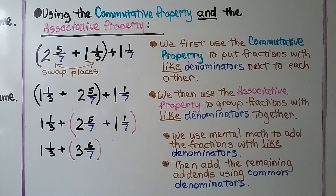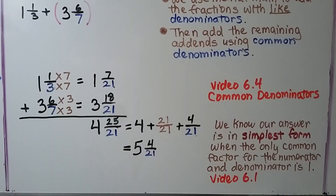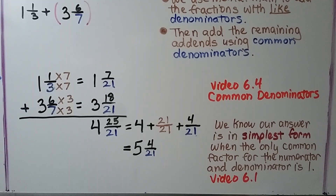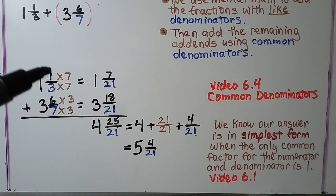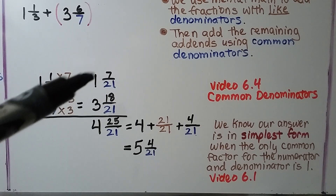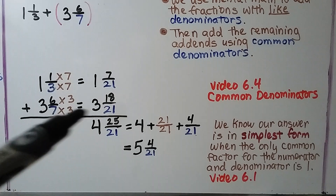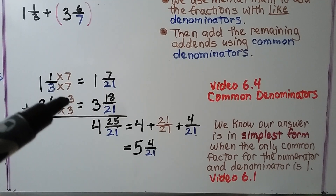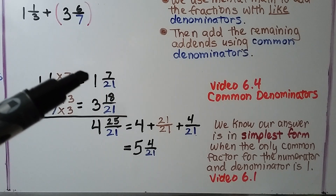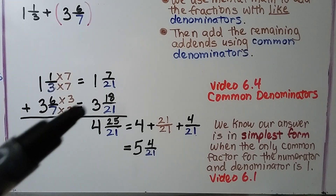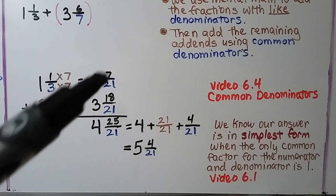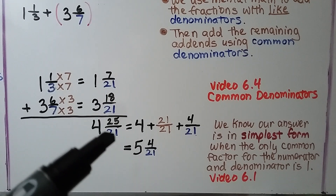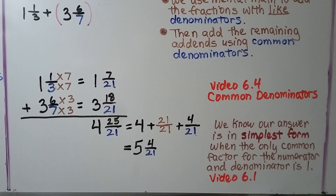Then we add the remaining addends using common denominators. We have 1 and 1 third plus 3 and 6 sevenths — a denominator of 3 and a denominator of 7. We multiply these denominators together to get a common denominator of 21. 3 times 7 is 21, so we multiply the numerator by 7 to get 1 and 7 twenty-firsts. And 7 times 3 is 21, so we multiply 6 times 3 to get 18 twenty-firsts. Now we have 1 and 7 twenty-firsts plus 3 and 18 twenty-firsts. We add the numerators to get 25 twenty-firsts and add the whole numbers to get 4, giving us 4 and 25 twenty-firsts. But this is a fraction greater than 1.